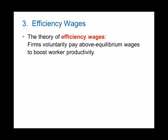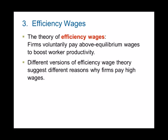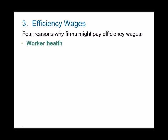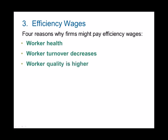The third cause is efficiency wages — firms pay higher wages to boost worker productivity. There are several reasons why a firm would pay more: worker health improves since better-paid workers eat better; worker turnover decreases because highly-paid workers want to stay; worker quality is higher since employees work harder to keep a well-paying job; and worker effort increases because employees don't want to lose a high-paying job. These are theories explaining why wages are kept above equilibrium, contributing to some degree of structural unemployment.